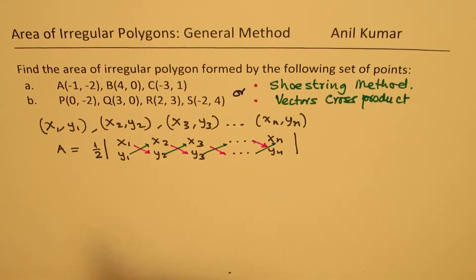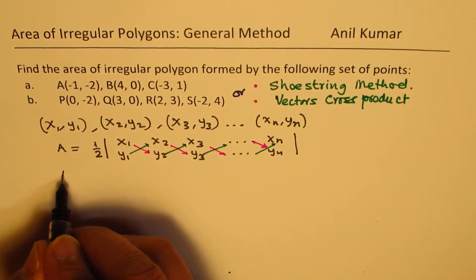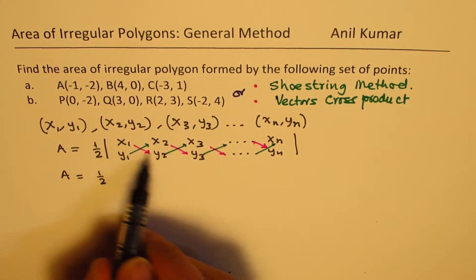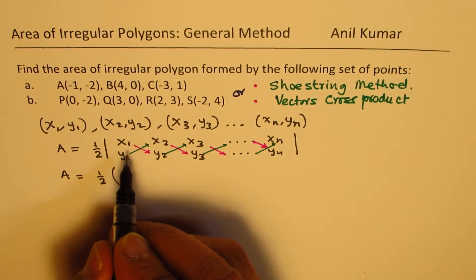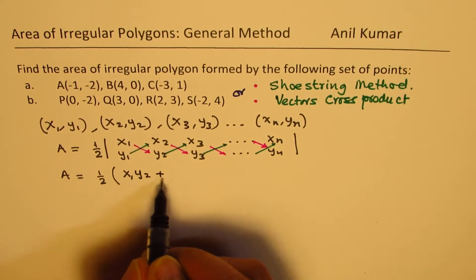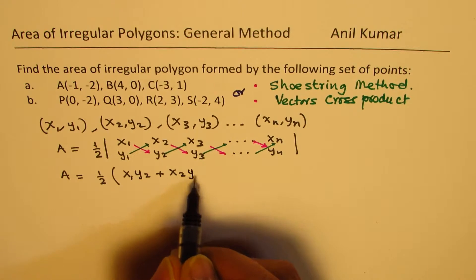What I am trying to say here is that the area for such a polygon will be half of, so we'll add these products, that is, we'll do x1, y2, plus x2, y3.